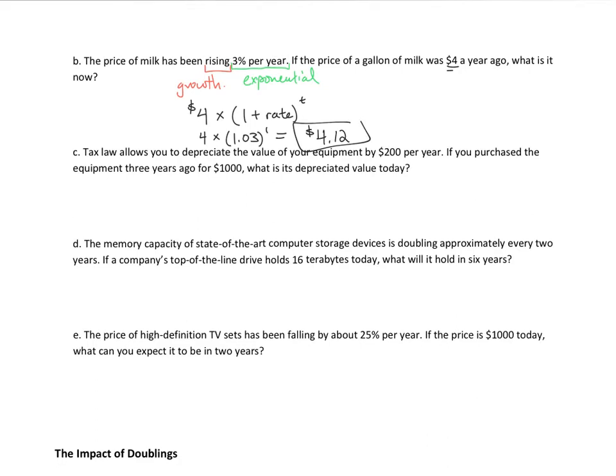Part C. Tax law allows you to depreciate the value of your equipment by $200 per year. If you purchased the equipment three years ago for $1,000, what is its depreciated value today? So we know this will be linear because we do not have a percentage. Will this be growth or decay? The word that leads you to knowing whether it is growth or decay is this word right here, depreciate. And depreciate shows that it will decay. Depreciate just means the value will go down, and down is a decay.